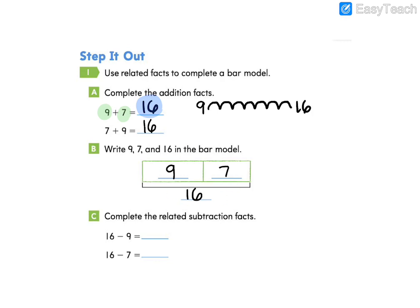So now we'll use our bar model to complete the related subtraction facts. The first one is 16 minus nine. We have our whole of 16. And if we take away our nine, what's remaining in our bar model? Seven is remaining. Go ahead and solve this one now and find 16 minus seven. You should have found that when we have 16 and we subtract seven, we are left with nine.